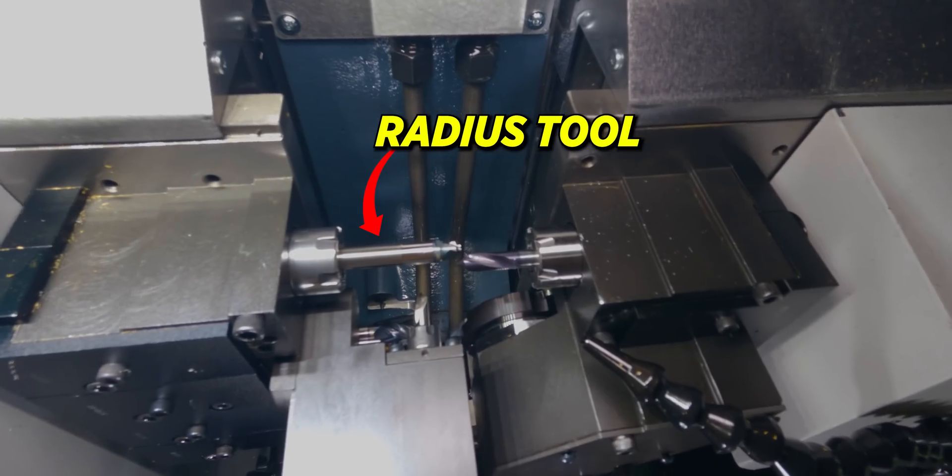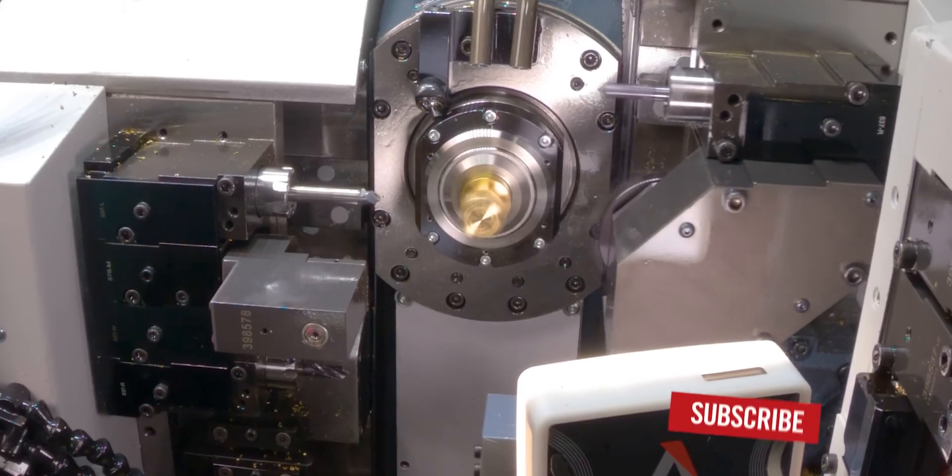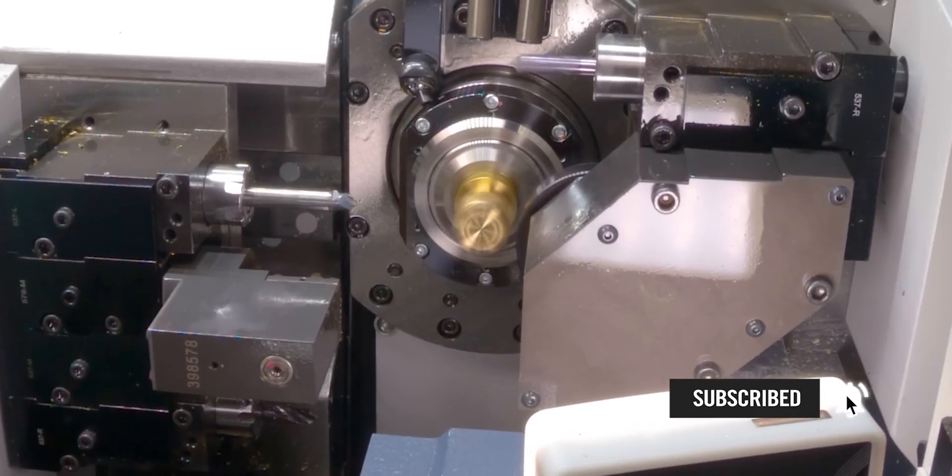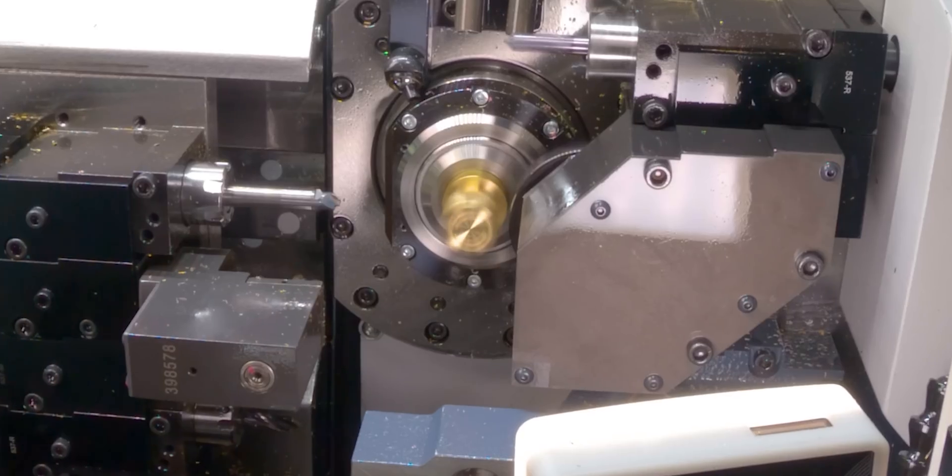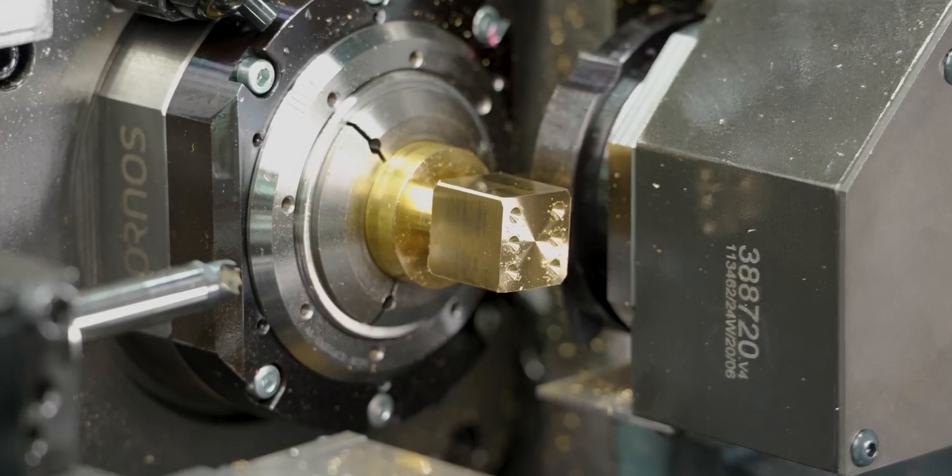But my radius tool right here was a little bit longer. So that's something again, life's not perfect. You have to watch out for these things. You're never always going to be able to have the same stick out in every tool, but try to minimize that as much as you can.